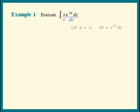Next, we find du and v. Du is obviously dx. V can be thought of as the integral of e to the 3x dx, or you can just work backwards — what do we differentiate in order to get e to the 3x? V equals 1 third of e to the 3x.